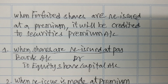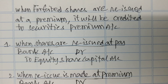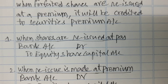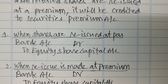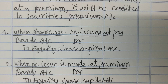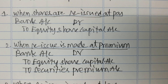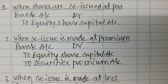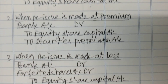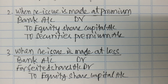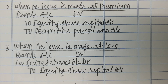When shares are reissued at par, the entry is bank account debit to equity share capital account. When reissue is made at premium, the entry is bank account debit to equity share capital account. When reissue is made at a loss, the entry is bank account debit to equity share capital account.